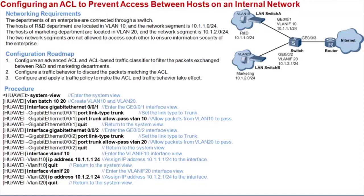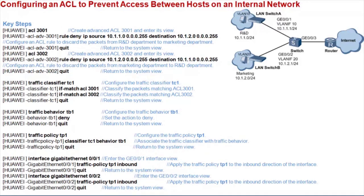Let's look at the configuration procedure. First, enter the system view to create VLAN 10 and VLAN 20. Set the GE0/0/1 link type on the switch to trunk and configure the interface to allow VLAN 10 packets to pass. Set the GE0/0/2 link type to trunk and configure it to allow VLAN 20 packets to pass. Assign IP address 10.1.1.1 to VLAN IF 10 and assign IP address 10.1.2.1 to VLAN IF 20. Create ACL 3001 and configure an ACL rule to discard the packets from the R&D department to the marketing department — packets from 10.1.1.0 destined for 10.1.2.0.